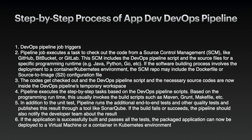Step three, the code gets checked out and the DevOps pipeline script and necessary source code are now inside the DevOps pipeline temporary workspace. Step four, the pipeline executes step-by-step tasks based on the DevOps pipeline script. Based on the program and runtime, this usually invokes a build script such as Maven, Grunt, Makefile, etc. Step five, in addition to unit tests, the pipeline runs additional end-to-end tests and other code quality tests, publishing the result through a tool like SonarQube. If the build fails or succeeds, the pipeline should also notify the developer team about the result.